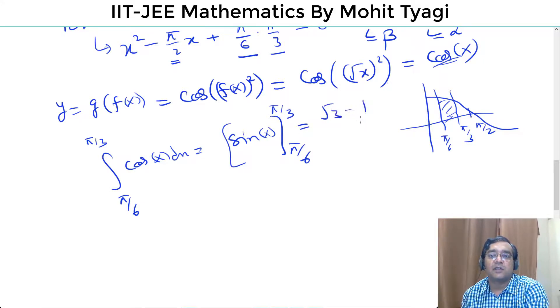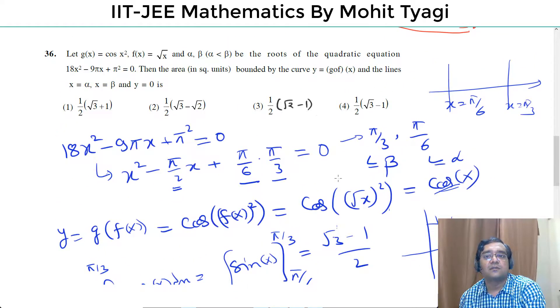Which will be √3/2 - 1/2, which is (√3 - 1)/2. Fourth answer.